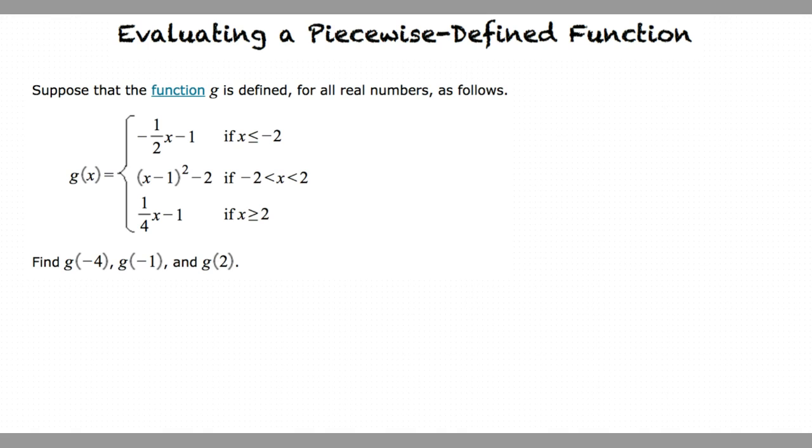The first part is linear with a domain of negative infinity to negative 2 with a bracket. Because of the equal sign within the less than sign, negative 2 is included in this part.